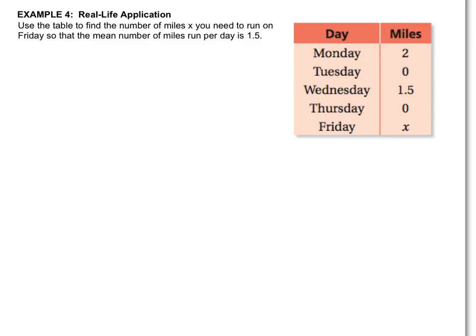This next example has us look at a table and figure out what's going on, create our own equation, and then solve it. We're looking at a table with the number of days — Monday, Tuesday, Wednesday, Thursday, and Friday — and the number of miles run each day. We're going to use this table to figure out the number of miles we need to run on Friday, because we don't know that value yet. We need to know how many miles to run on Friday so that the mean of miles run per day is 1.5.